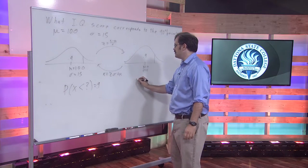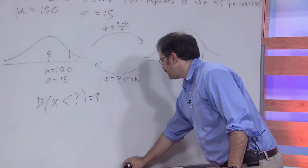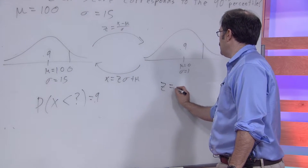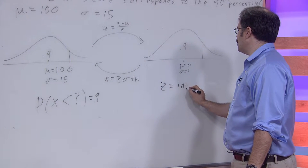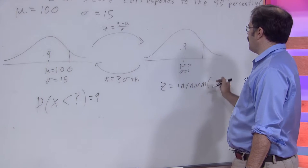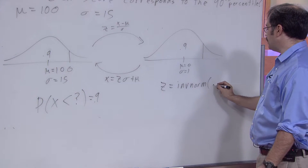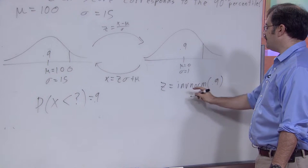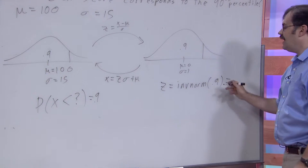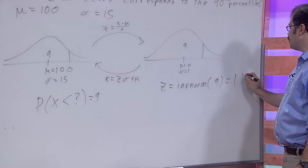What we said was we used the z-score would equal INV norm. And you want an area to the left, but a percentile does give you an area to the left, INV norm of 0.9. And when you plug that into your calculator, you'll see that that's 1.28.